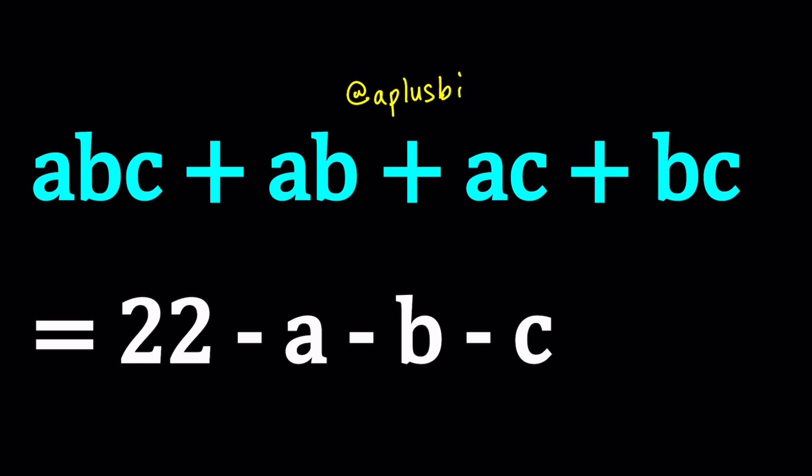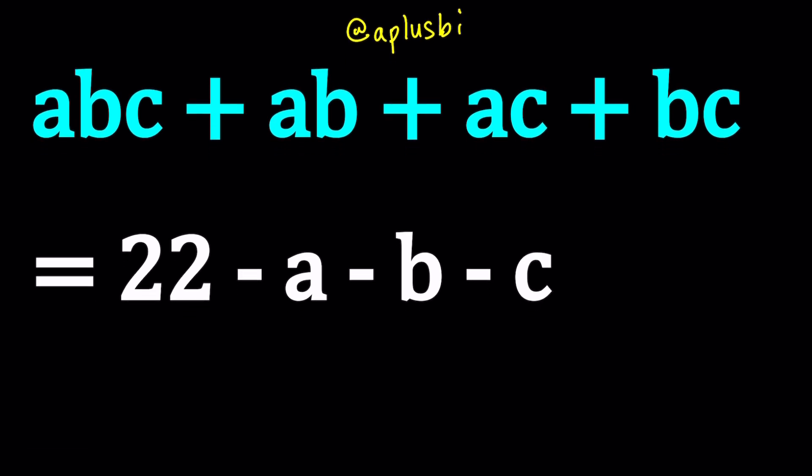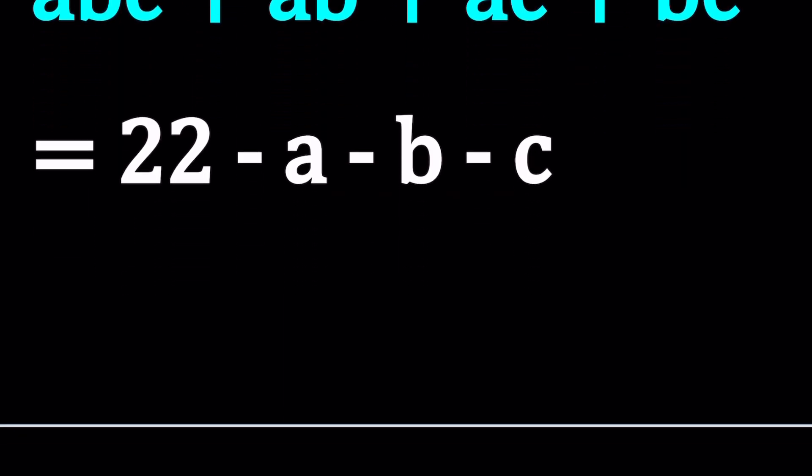Great. So we have this equation and now we're going to try to solve for a, b, c. But how do you solve when you have three variables and a single equation? That's the beauty of Diophantine equations. They can be solved most of the time. So in this case we have a really nice pattern. Let's go ahead and put everything on the same side except for the number 22. So let's add the abc. We get abc + ab + ac + bc + a + b + c equals 22.